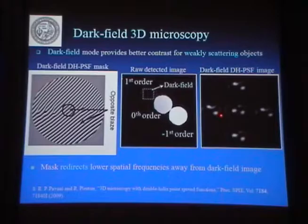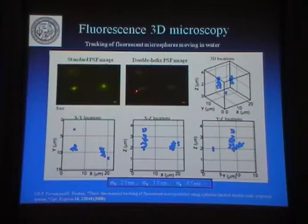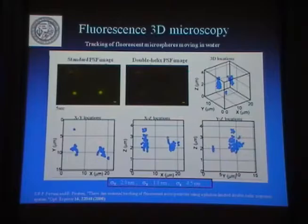You can also do dark field microscopy — similar thing. We implement this with a spatial light modulator. You can also use it in fluorescence. These are fluorescent beads. This is the standard point spread function, and this is the double helix. Here I'm going to show them moving — these are fluorescent beads moving. Here you see a spot, but with the double helix you can also see the orientation of the two spots, which gives you the location. So you can track in 3D. Precisions depend on the number of photons collected and the noise, and they are in the nanometer range. You can track multiple particles simultaneously.